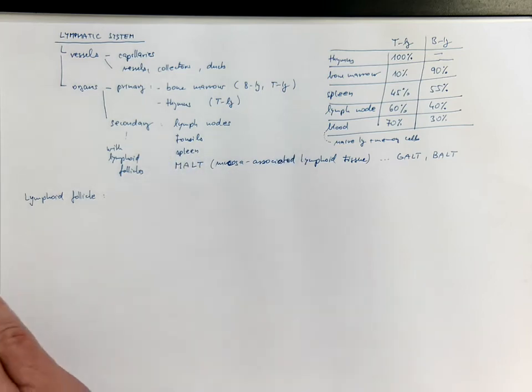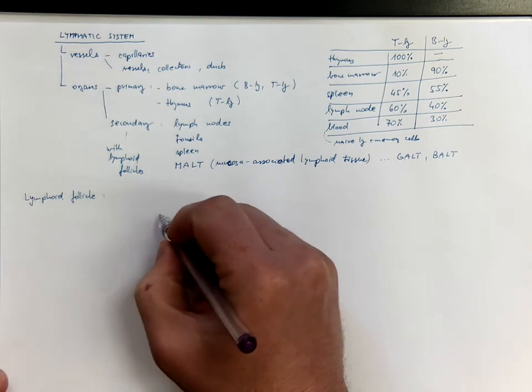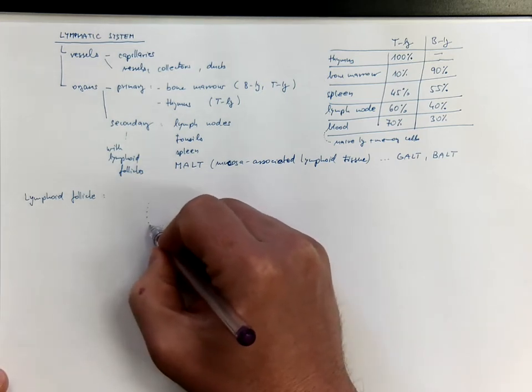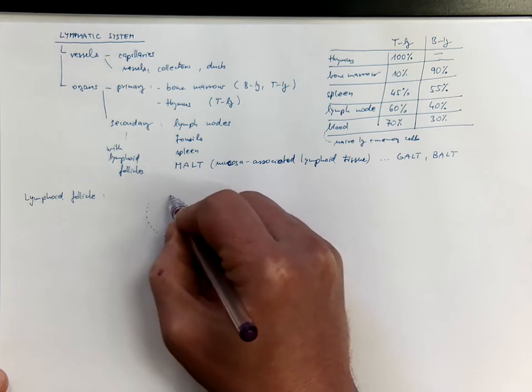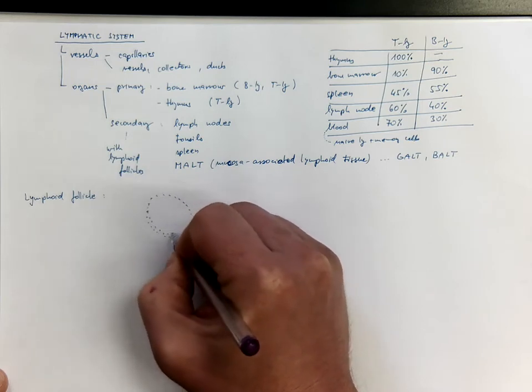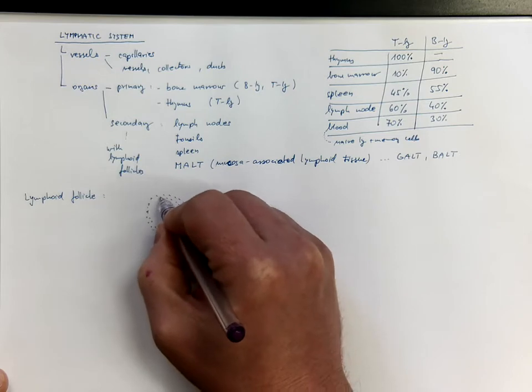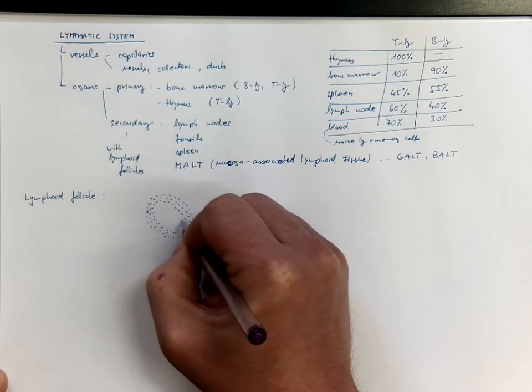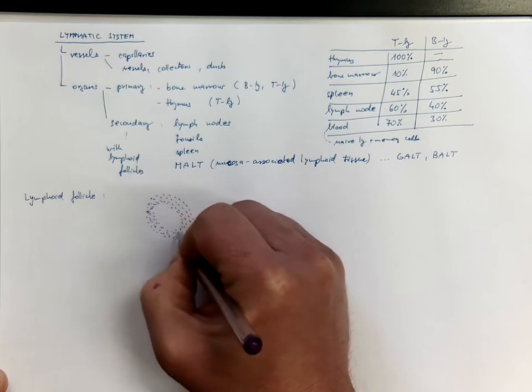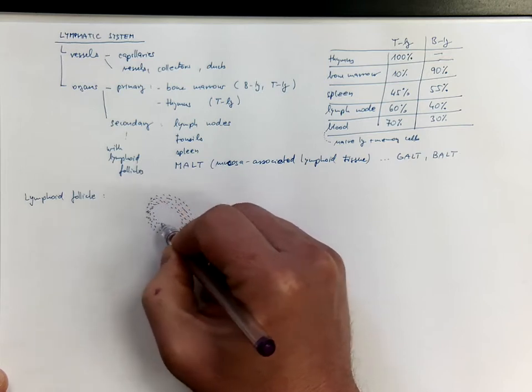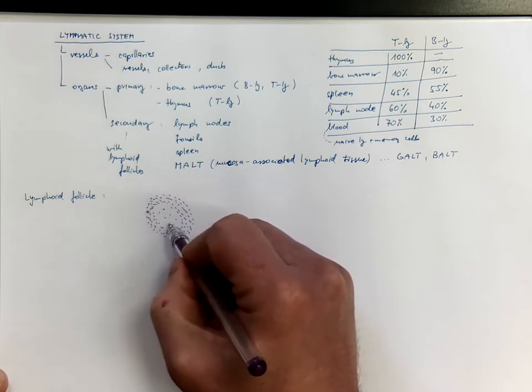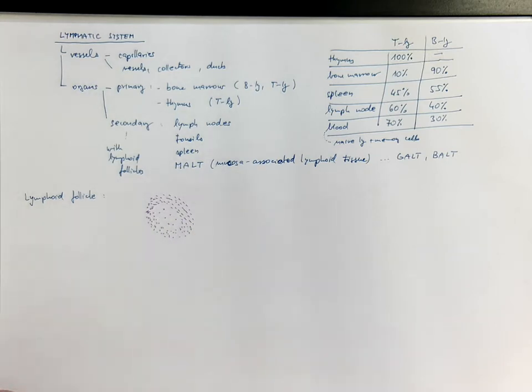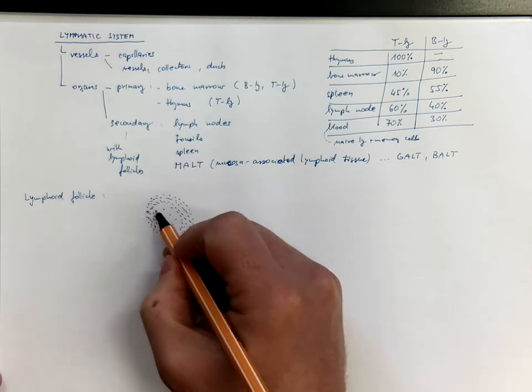But the general structure shows a mantle zone on the periphery, which is densely populated by lymphocytes, and a center called germinal center, which contains less lymphocytes. And therefore, it appears as more pale region.